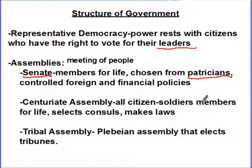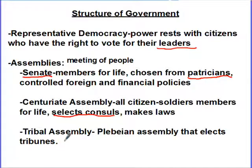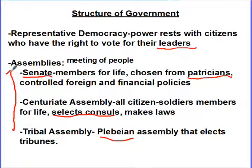The centurion assembly — any citizen soldier can be a member for life, and these people would select consuls who make the laws. The tribal assembly is a more plebeian-level assembly that elects tribunes. More people can be involved in the tribal assembly because plebeians are more plentiful than patricians. In terms of power structure, the Senate would be at the top — the most powerful assembly — and then the tribal assembly would be at the lowest level.